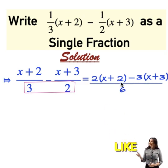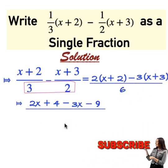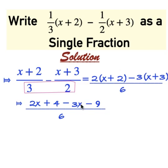We have 2x + 4 - 3x - 9 over 6. Then we can now simplify as 2x - 3x gives us -x. 4 - 9 gives us -5.